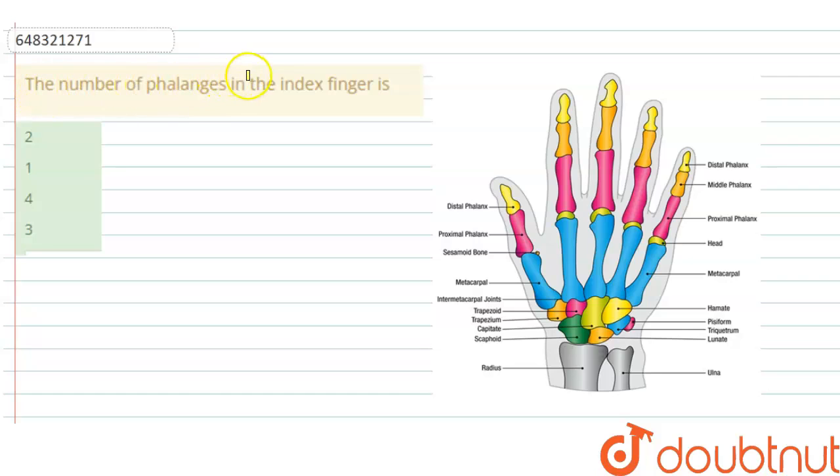The number of phalanges in the index finger: 2, 1, 4, or 3. So the question is asking how many phalanges are present in our index finger. As we can see in this diagram, there are many bones which make up our hand.